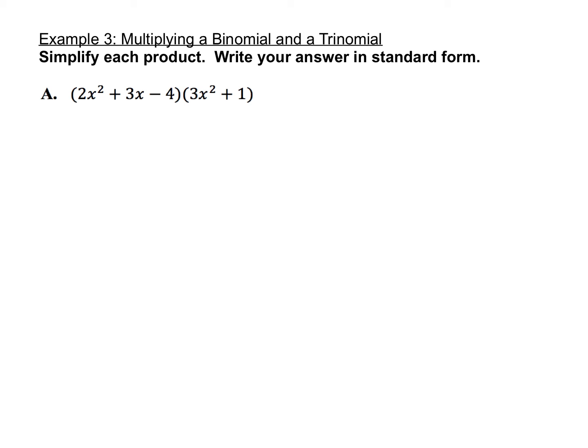The last thing we have to look at today is how to multiply a binomial with a trinomial. The FOIL pattern only works for binomials times binomials, but if you just extend the pattern with arrows, you can use it for a binomial times a trinomial. It's also fine to use the box method — I find that a lot of students prefer the box method for a binomial times a trinomial. I'll show you with the FOIL pattern, though it's more like distributing over and over again.